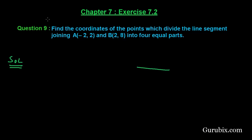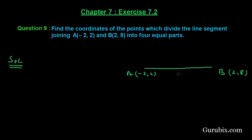Suppose this is the line segment AB. Coordinates of A are given as (-2, 2) and coordinates of B are given as (2, 8). Now we shall find the coordinates of the midpoint of AB. Suppose the midpoint is C.